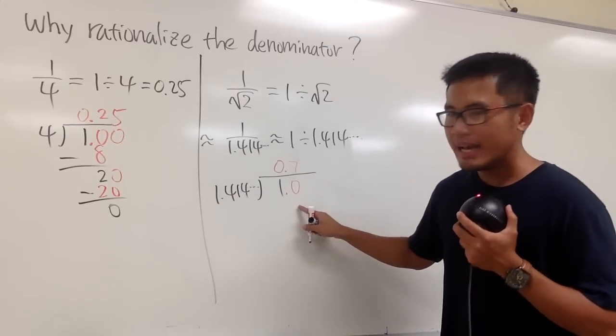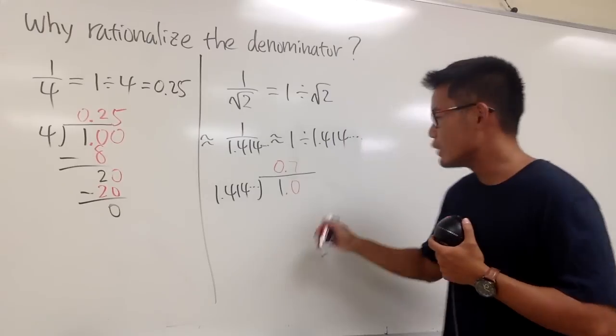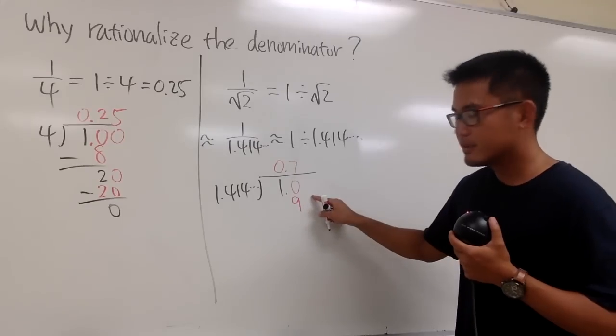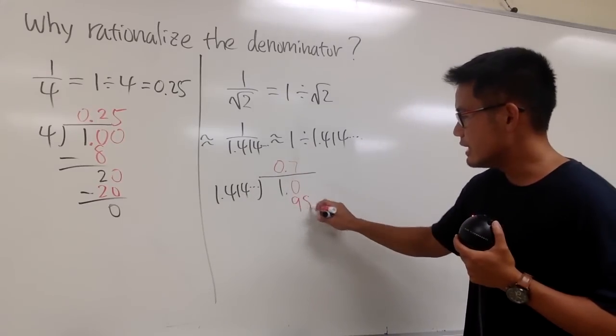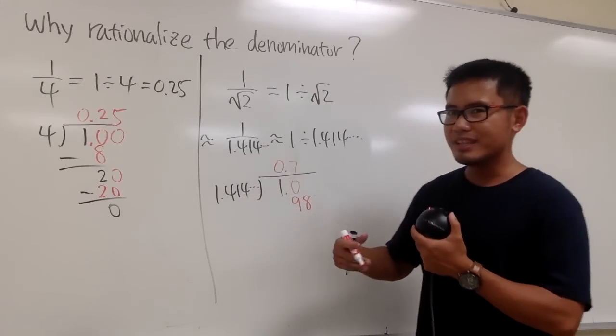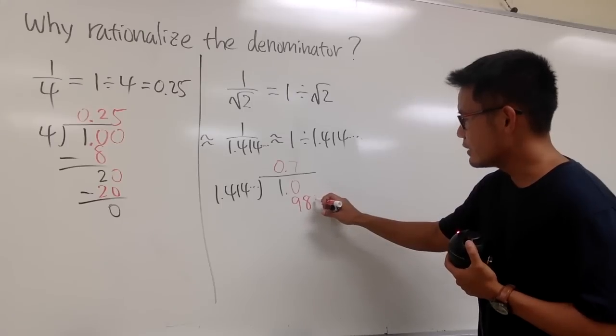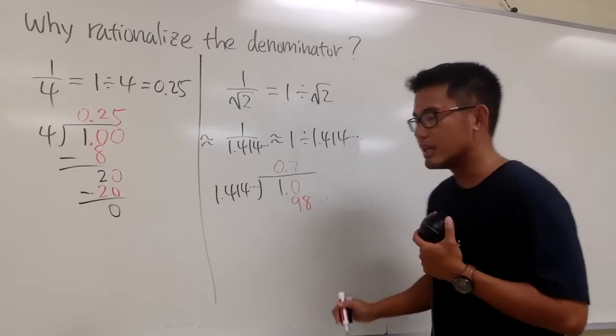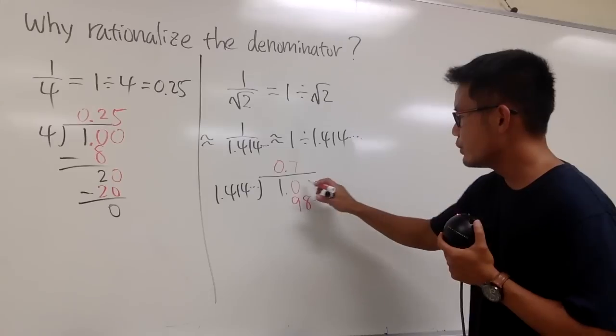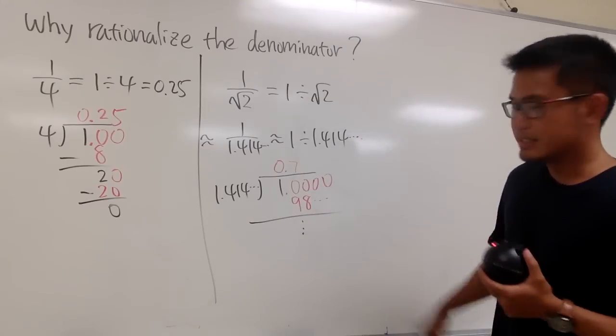7 times 1 is 7. And you also have to do 7 times 4, which is 28. And the 2 got carried over, so you actually have to put down 9. And then here you have that 8. And then 7 times 1 is 7. So this is 8 and then 7. But then you do 7 times 4 is once again 28, and 2 get carried over. In fact, you don't even really know what it is because you don't know what the next number is. But it's 0.7 something. And you cannot really continue. It's really difficult.